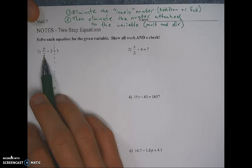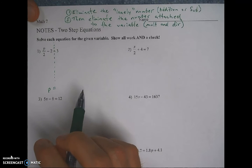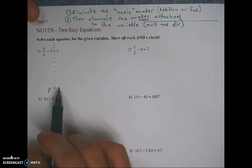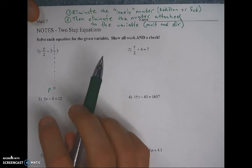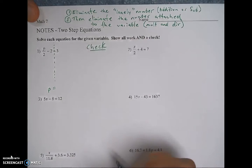Then eliminate the number attached to your variable. And that is always going to be your multiplication or your division. Okay, so we're going to eliminate the one that's lonely, that's by itself first. That's the adding and subtracting. Then we're going to eliminate the one that's attached, and that's either going to be with division or multiplication. We get rid of them the same way we've been practicing, so you already know how to do that. And then once we've got that isolated, we'll have an answer, p equals something, and we're going to show a check and make sure we did get it right.